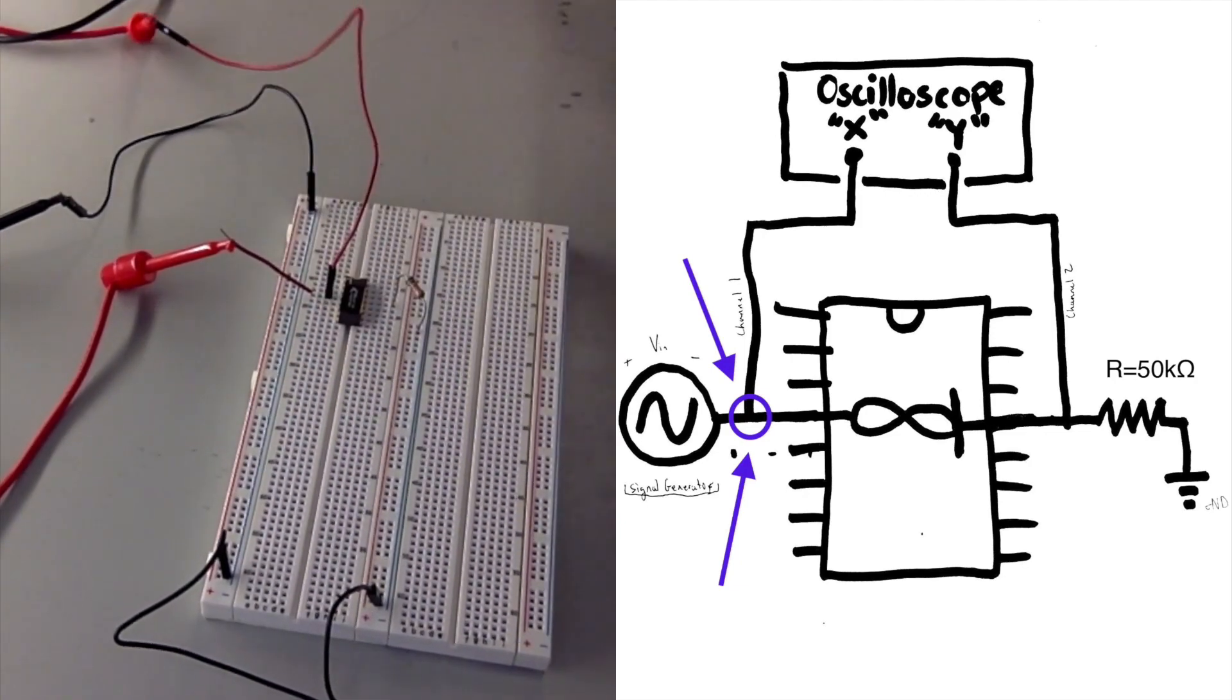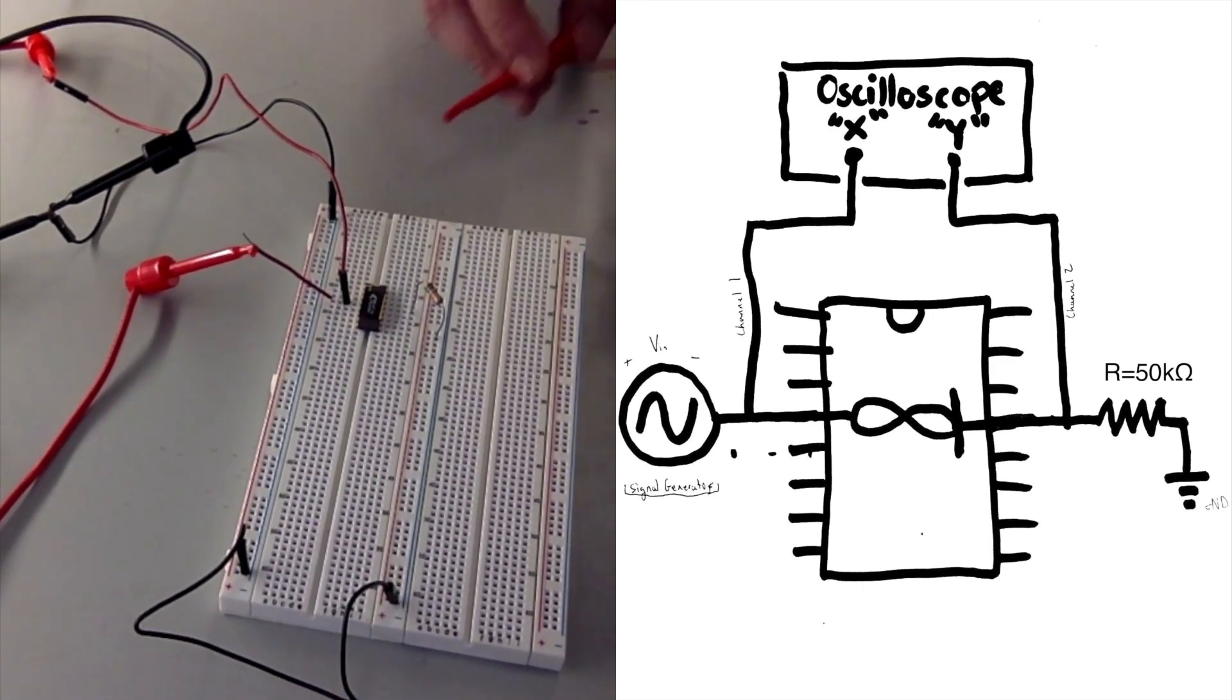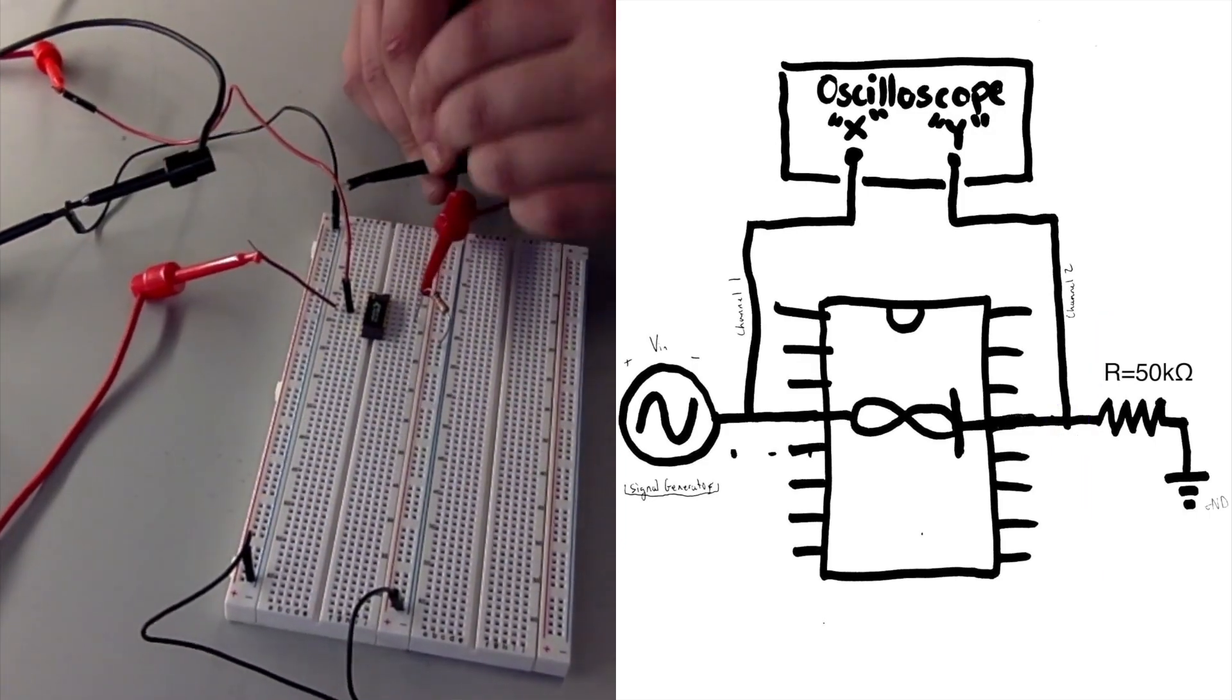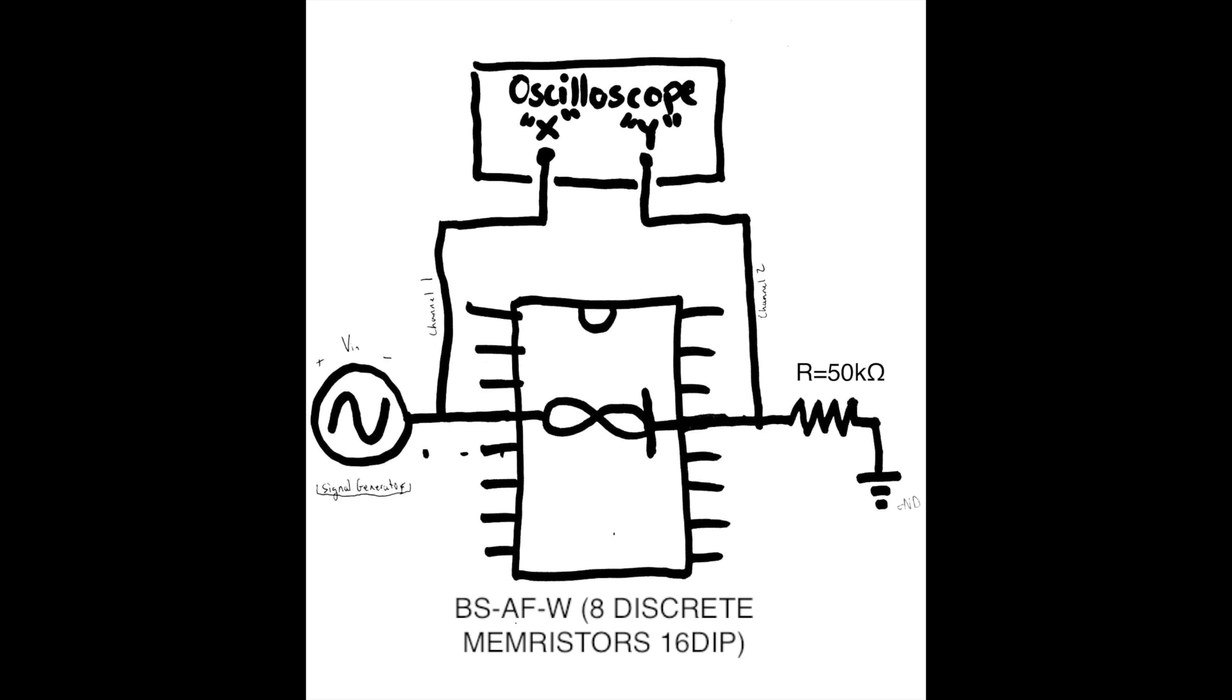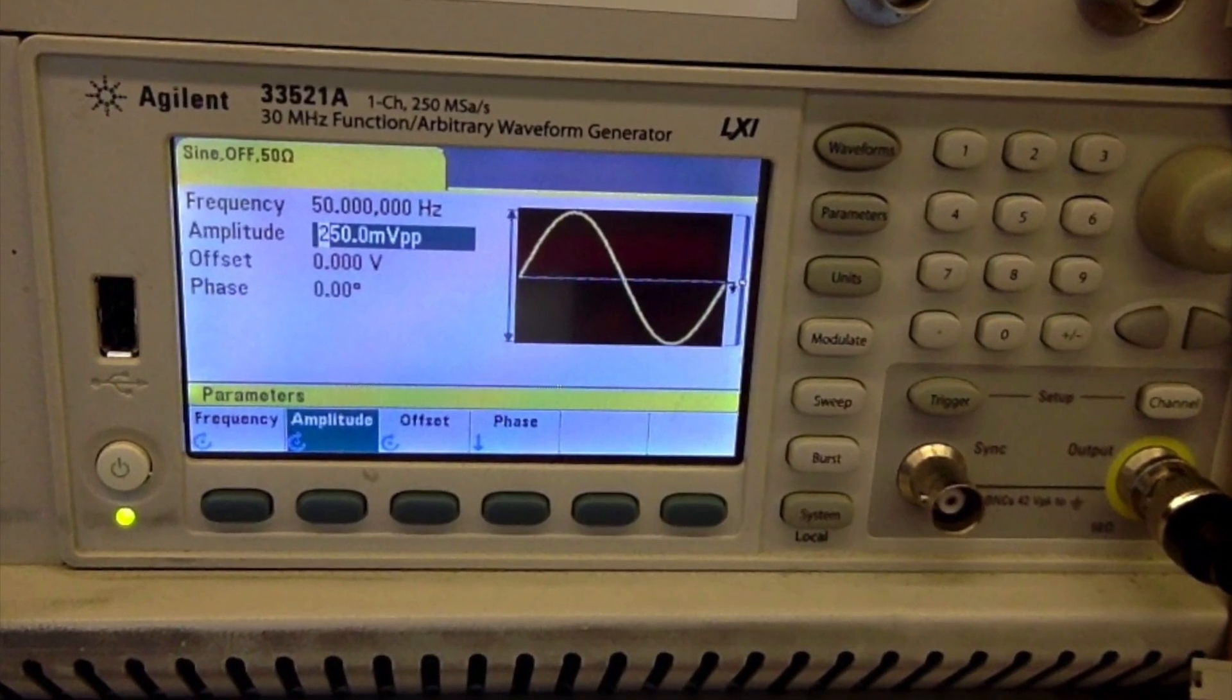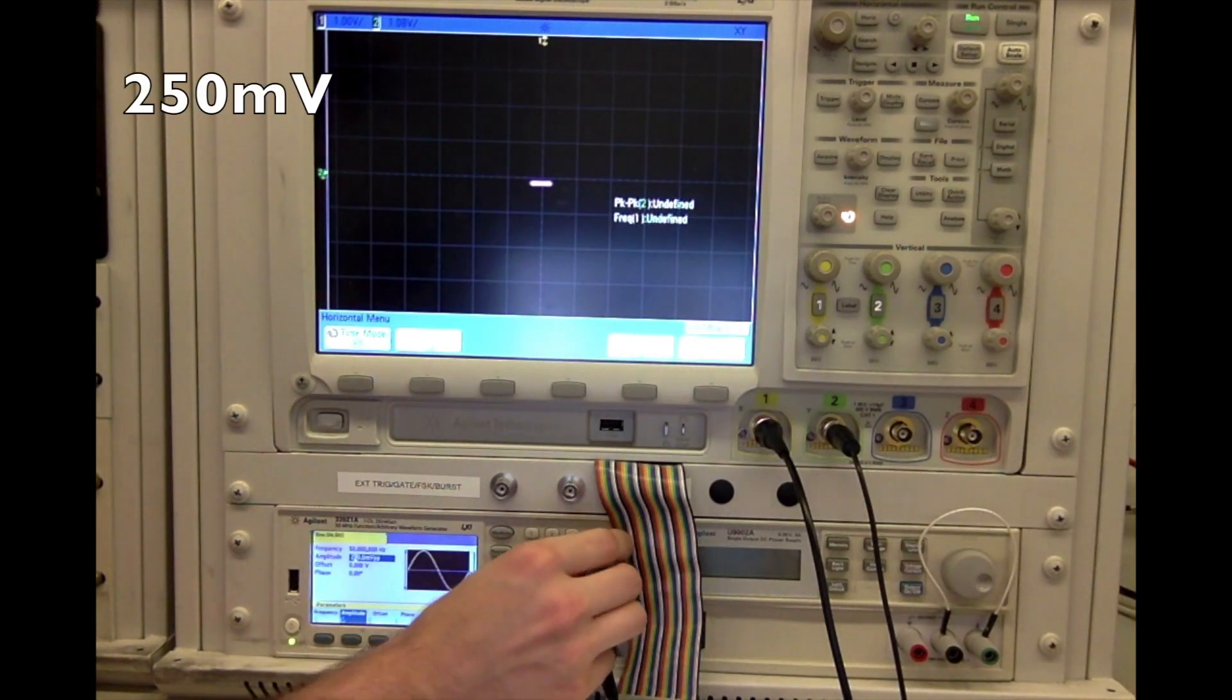That's our channel 1, and we'll set that up. We'll turn on the signal generator, and then we will slowly start increasing.